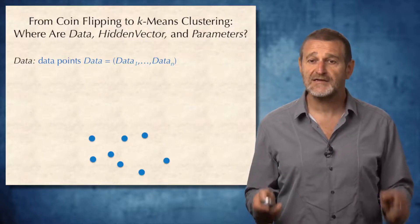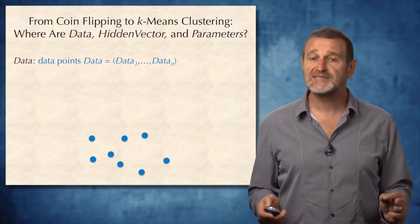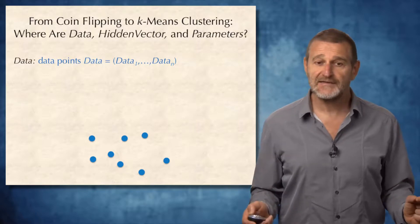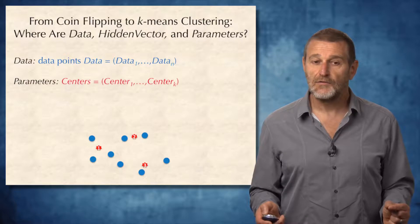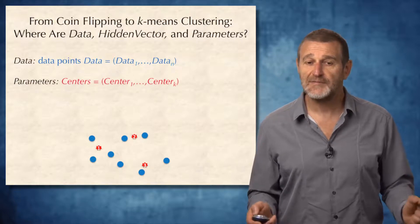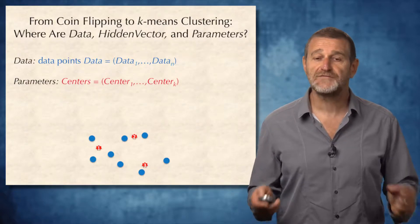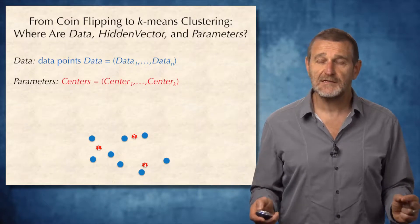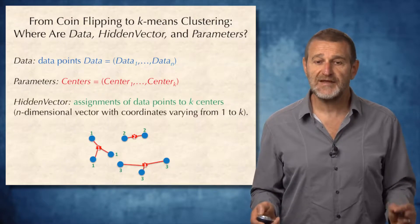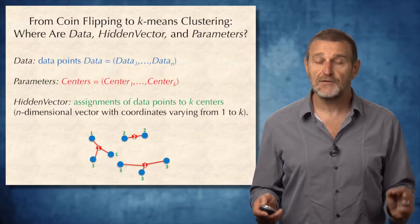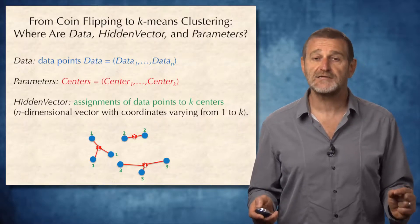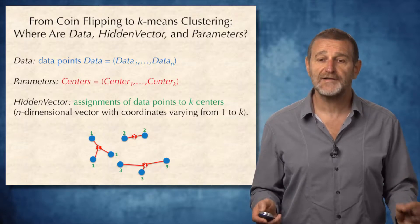Where are the data, hidden vector, and parameters in k-means clustering? Well, data are obviously the set of data points. What are the parameters? Parameters are, of course, the positions of the centers. And what is the hidden vector? Hidden vector is simply an assignment of data points to k centers, which is an n-dimensional vector with these coordinates from 1 to k.